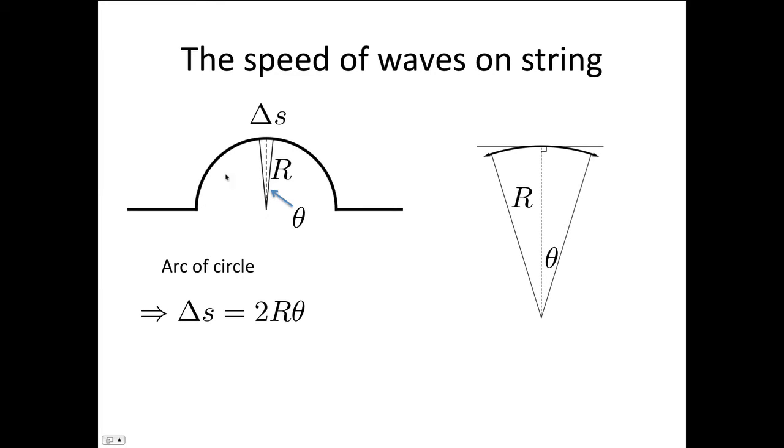Delta s is a little arc length here. R is the radius of our semicircular hump. Theta is the angle between the middle of our arc length and the edge of our arc length. So the total angle in here is 2 theta. So from our equations for arc length, we know that the length delta s is equal to 2R theta, because the angle is 2 theta and the radius of our semicircle is R.